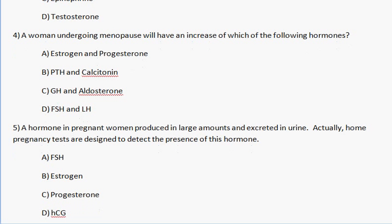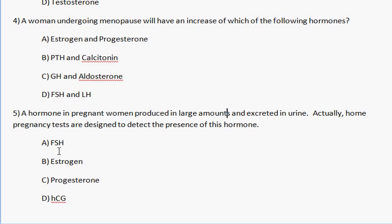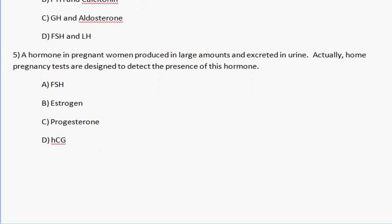Question number 5, question number 6: A hormone in pregnant women produced in large amounts and excreted in urine — you want a pregnancy test to detect the presence of this hormone. The answer is HCG, human chorionic gonadotropin hormone. That's produced excessively, it is excreted in urine, and that's what the home pregnancy test is designed to test. It's also the cause of a lot of morning sickness.